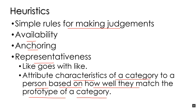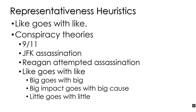Another way of defining the representativeness heuristic is: like goes with like. What I mean is that when somebody matches the prototype, they are like that category, so they should have the same characteristics. We're boiling the representativeness heuristic down to its basic components — just assuming that things that look like something are that thing. If you look like a snake and walk like a snake, you are a snake. Like goes with like.